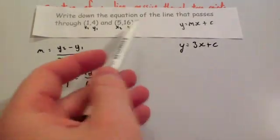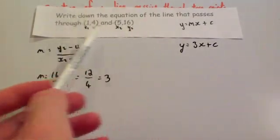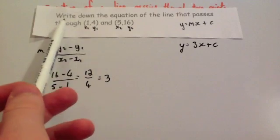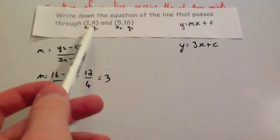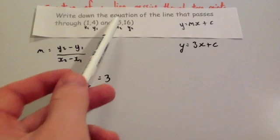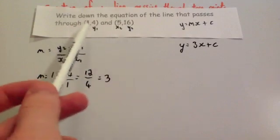So we know the gradient. We just need to now find the c. Unfortunately, we don't know a coordinate that has zero something, so we're going to have to put one of these in. Let's put in (5,16). You could also put in the (1,4). It's up to you.